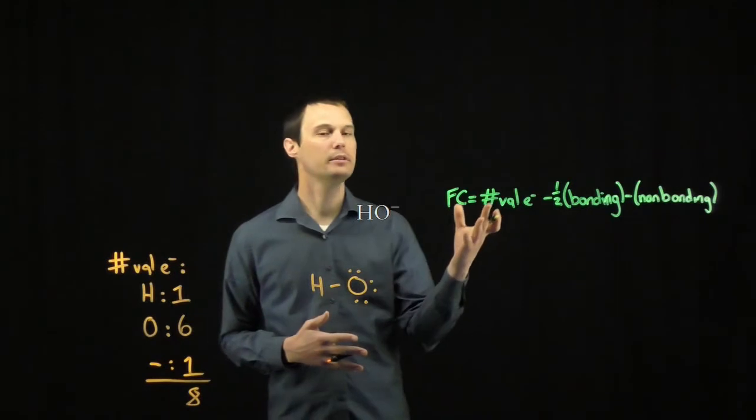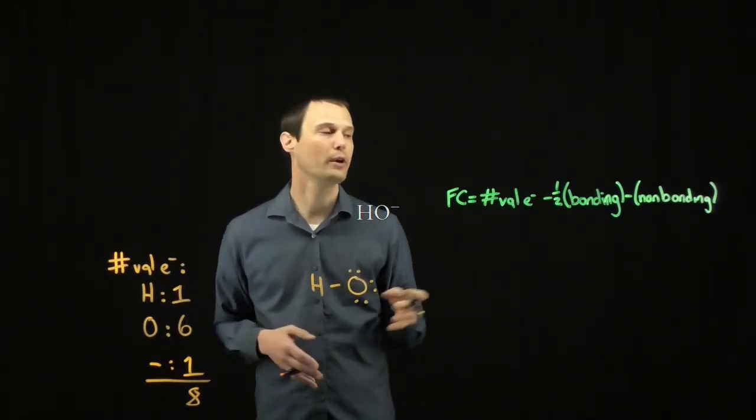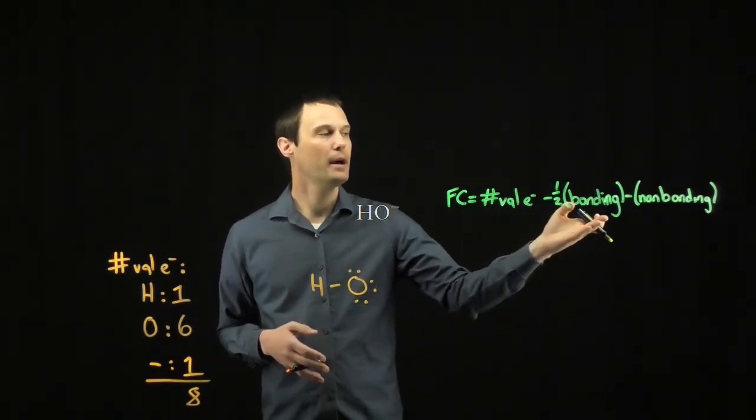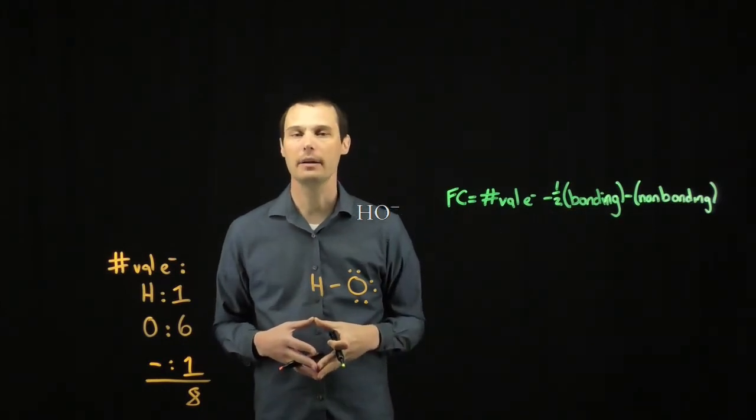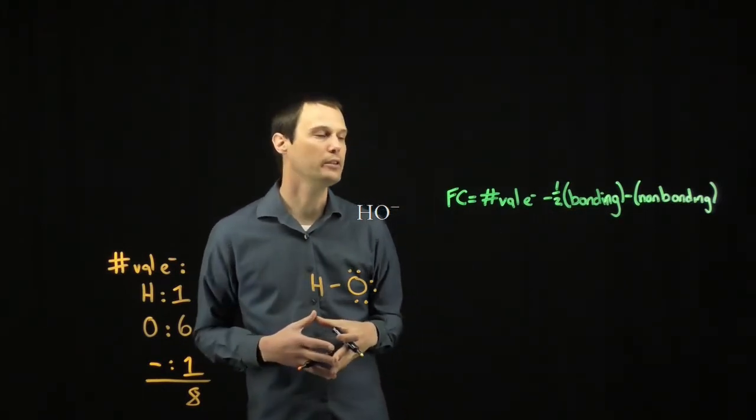Formal charge of an element is the number of valence electrons an element should have in its neutral ground state, minus half of the bonding electrons and all of the non-bonding electrons. The non-bonding electrons are the valence shell electrons.